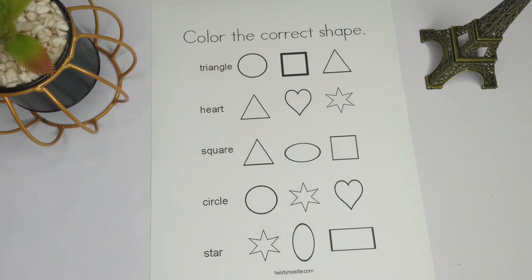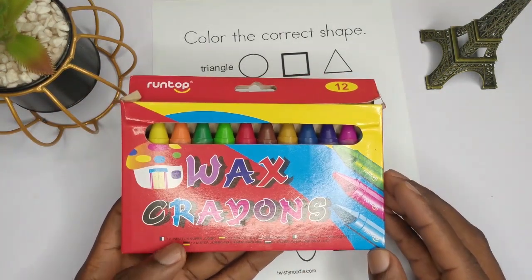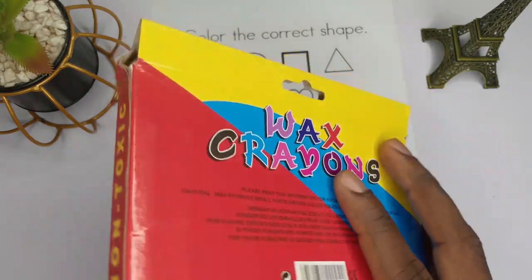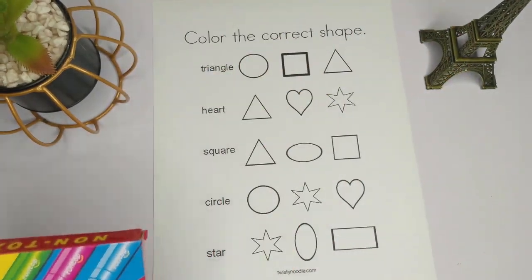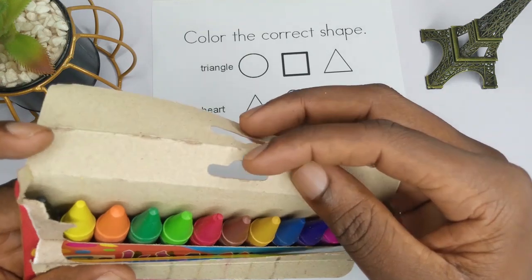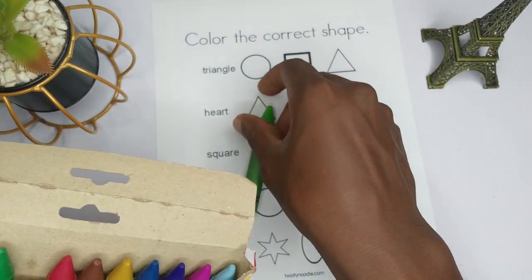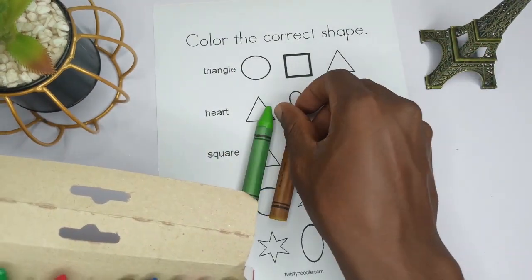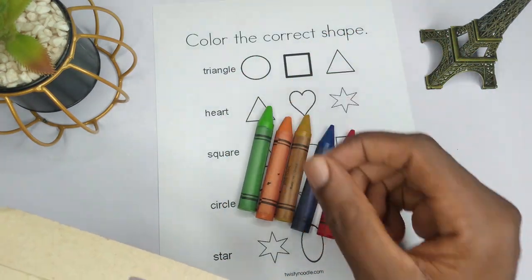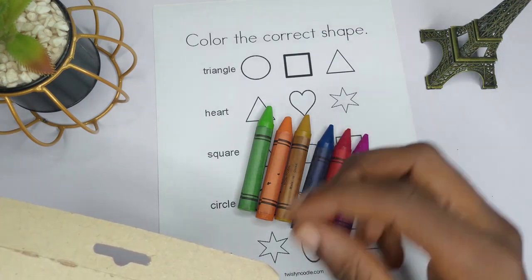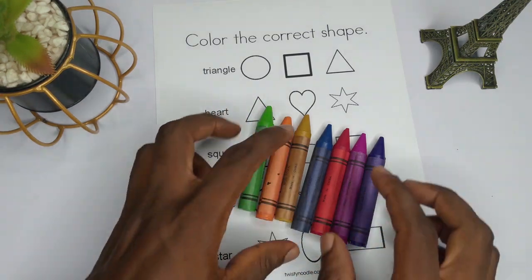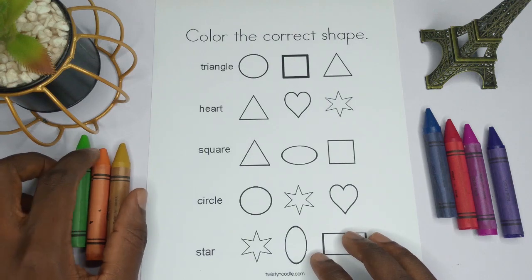For the purpose of coloring I'll be using a wax crayon — this is from Run Top, but any regular wax crayon can also help you do this exercise. I'm going to take out some random colors: light green, yellow, deep blue, red, orange, and a couple more. I'll just be using them at random, so let me move them to the side.